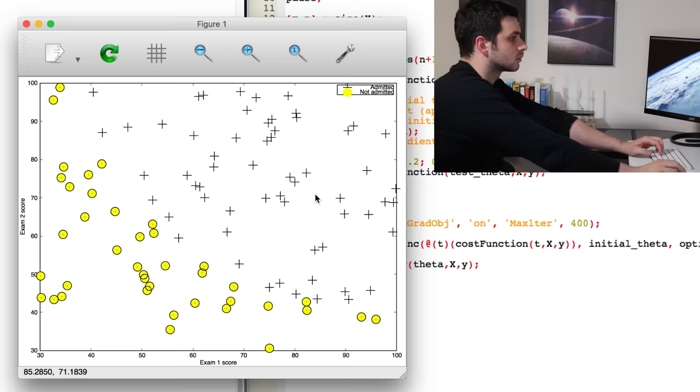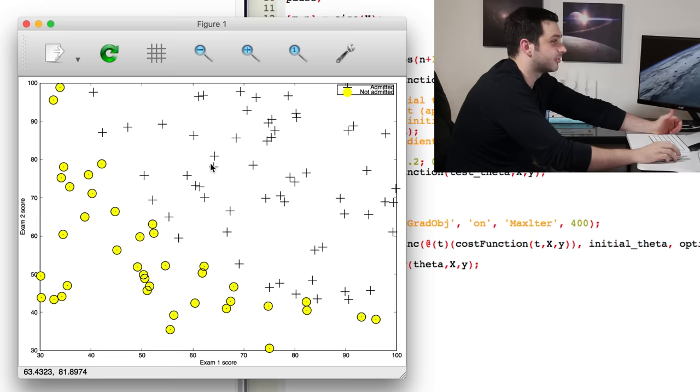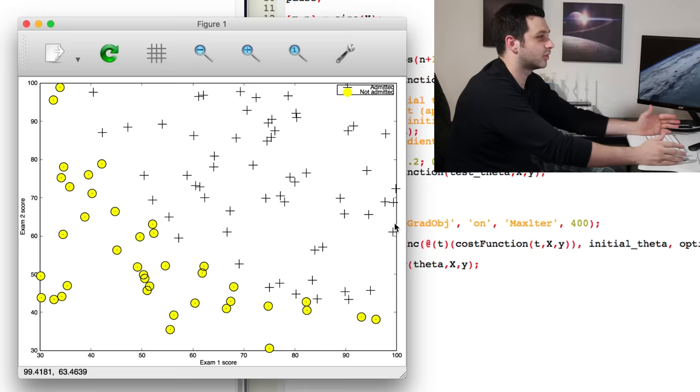Okay, so here we have a plot of all the data where you can see exam one scores here and exam two scores here. And people got admitted or represented by pluses and those not admitted by these yellow circles. So, this is just the graph. But now the question is, let's say someone gets a 45 on exam one and a 70 on exam two. What's their percent chance of getting accepted into this college based on how everyone else did? Well, now I have to implement the algorithm to find that curve which yields the minimum error based on that sigmoid function graph.